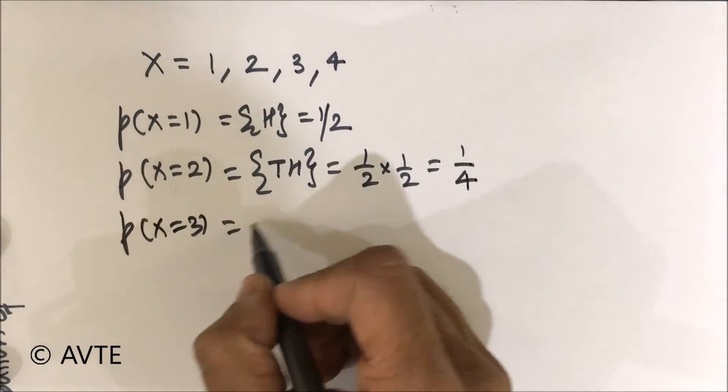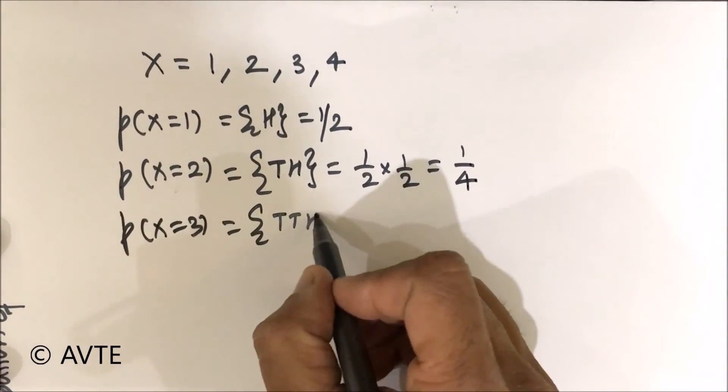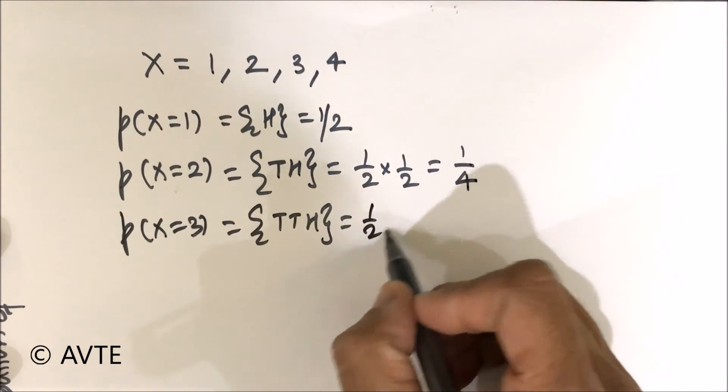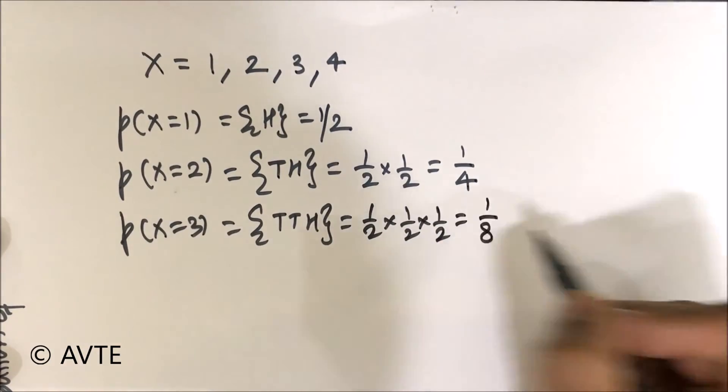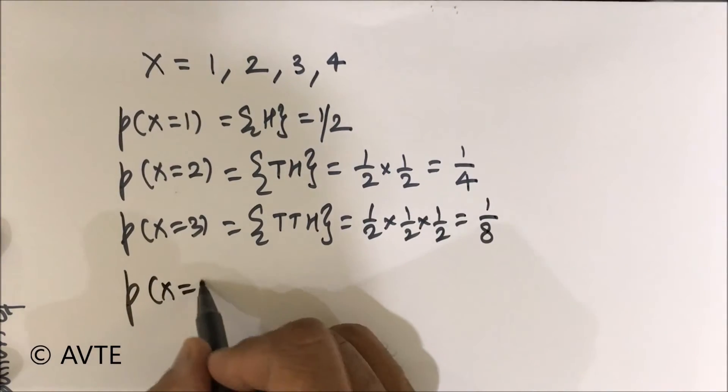When x is equal to three, then the possibility will be tails, tails, and heads because as soon as you get heads you need to stop it. So this is one by eight. And finally when x is equal to four.